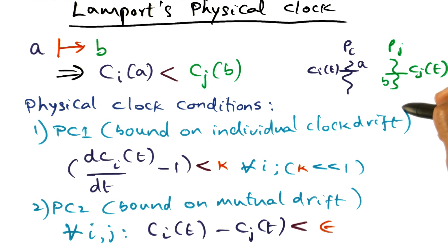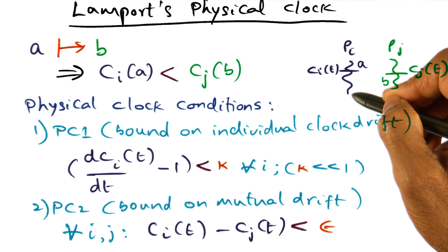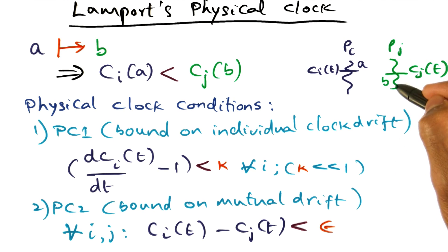So PI, there's a process PJ. Event A is happening on PI, and event B is happening on PJ.